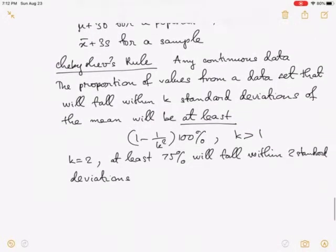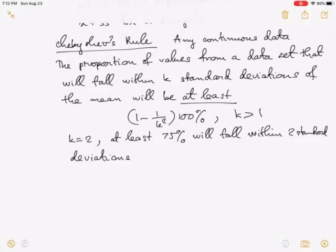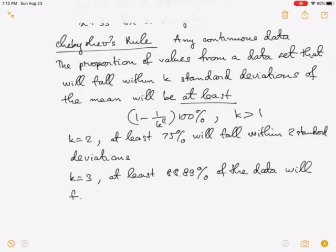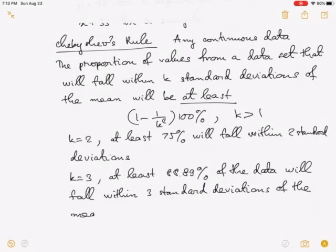And when k equals 3, then at least 88.89% of the data will fall within 3 standard deviations of the mean.